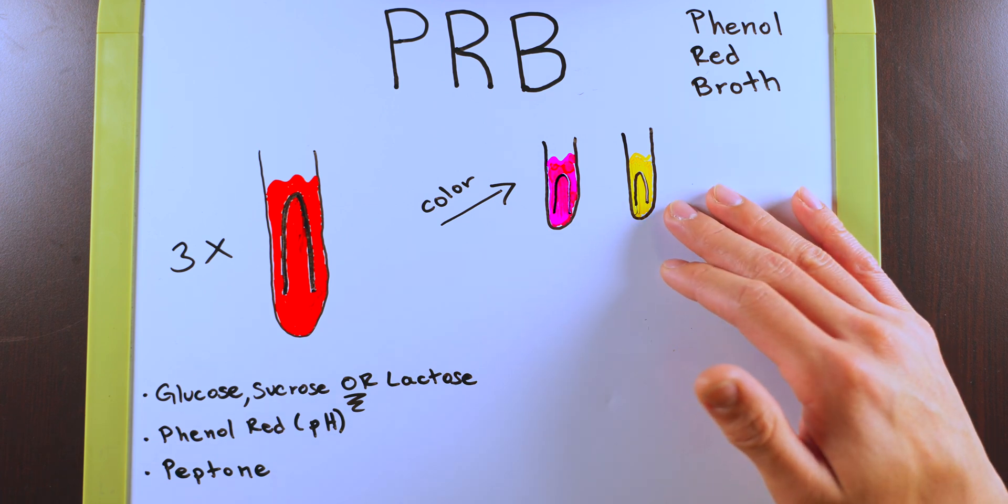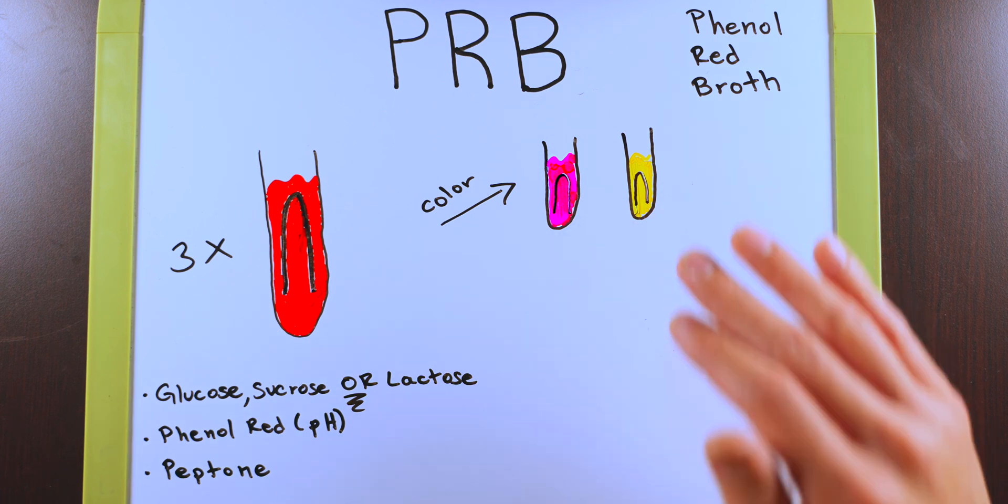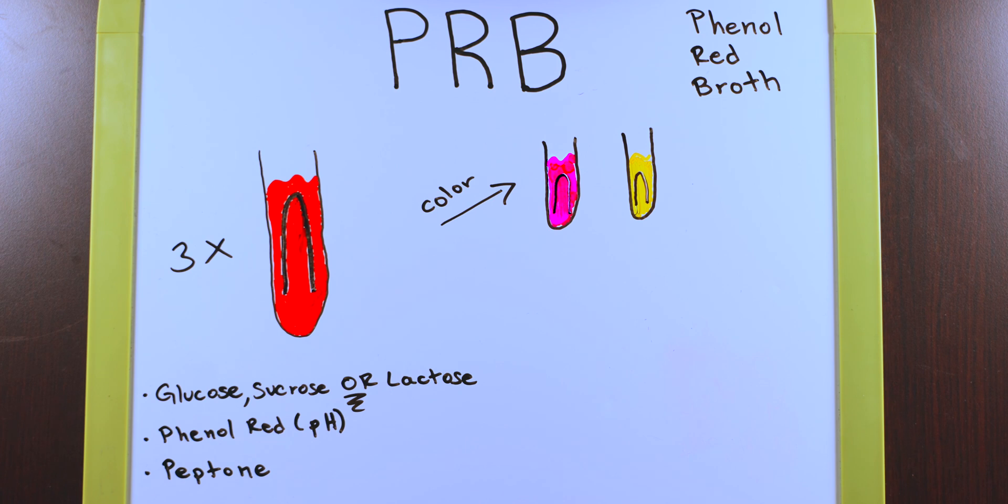However, if your test tube is yellow as we have over here, this indicates to us that the pH in the broth is now below or at 6.8, and this is consistent with acid end products.